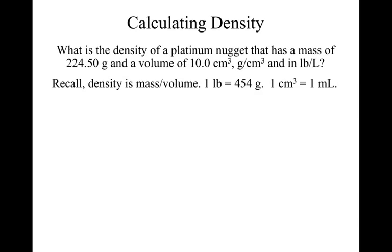We'll go through these examples with calculations involving density relatively quickly. To start it off, we're being asked for the density of a platinum nugget that has a mass of 224.5 grams and a volume of 10.0 centimeters cubed.